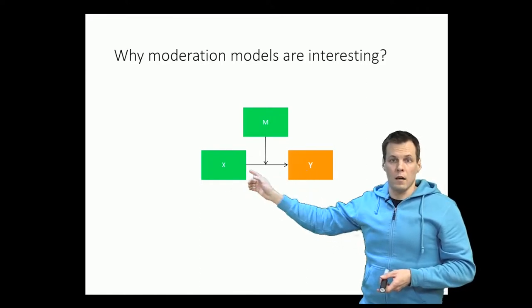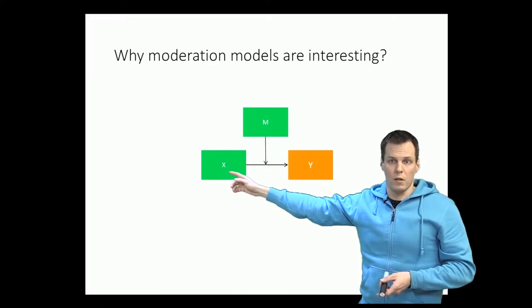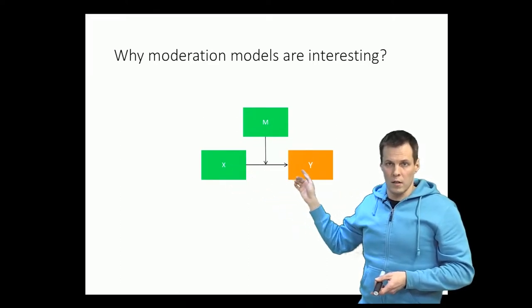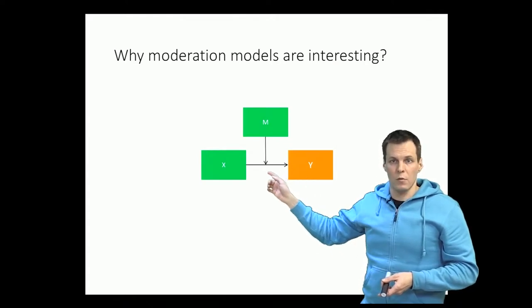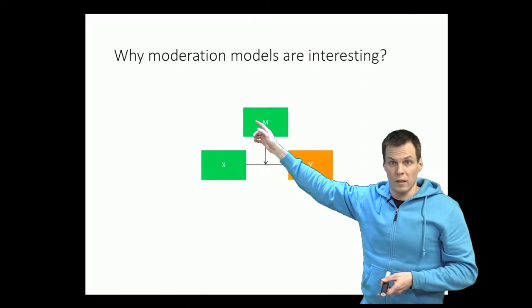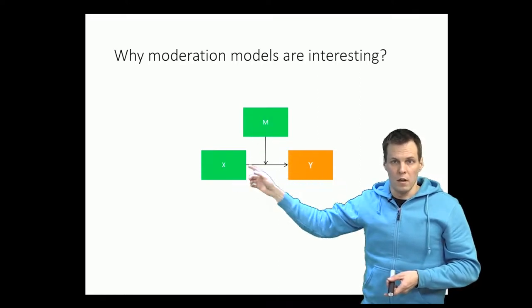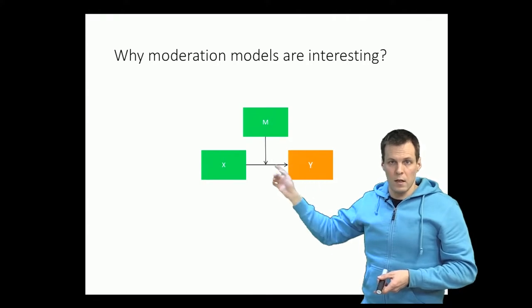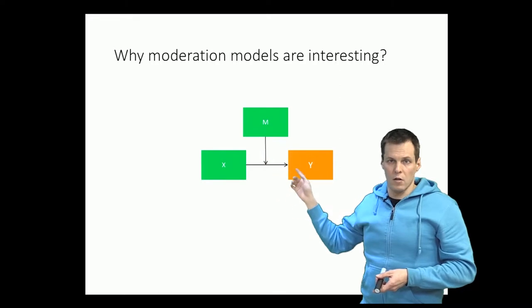Let's say X is the amount of weights that you lift per week, how many times a week you go to the gym, and Y is your weight gain, so how much muscle mass you gain. That relationship could be moderated by the amount of food that you eat. If you eat a lot while at the same time going to the gym, then you will gain muscle mass. If you go to the gym a lot and you don't eat much, then there is no muscle gain.